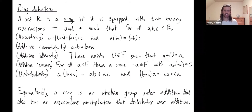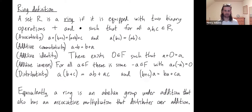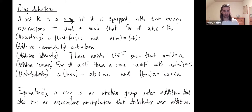And you need to have additive inverses. You don't necessarily need to have multiplicative inverses. And you have to satisfy the distributivity property, which we have to write out twice just because we haven't assumed that multiplication is commutative. The distributivity property tells you how addition and multiplication relate. In other words, a ring is an abelian group under addition that also has an associative multiplication that distributes over addition.